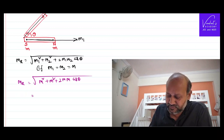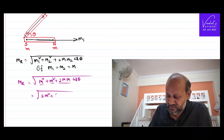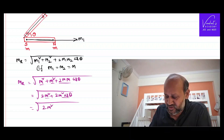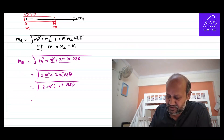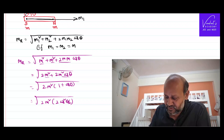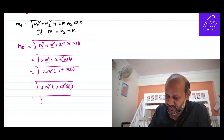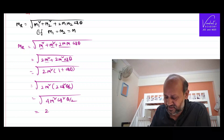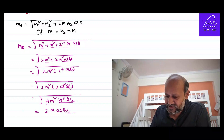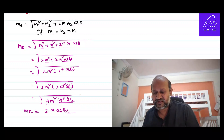Let us simplify this. Square root of m squared plus m squared gives 2m squared, and 2m·m·cos(theta) is another 2m squared cos(theta). Taking 2m squared common from both terms gives root of 2m squared times (1 plus cos theta). In trigonometry, 1 plus cos(theta) equals 2·cos squared(theta/2), so altogether we get the square root of 4m squared cos squared(theta/2). The answer is 2m·cos(theta/2).